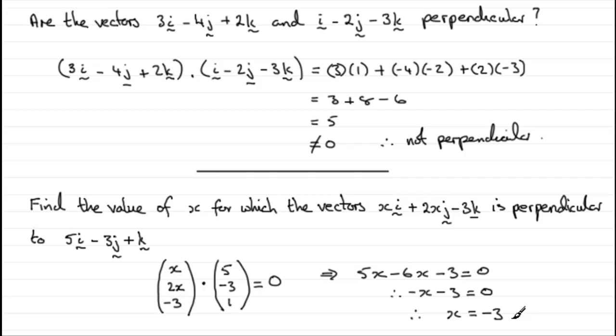So hopefully that's given you some idea of how we can use the scalar product for perpendicular vectors. That the scalar product should always equal 0.